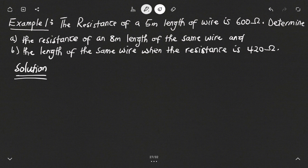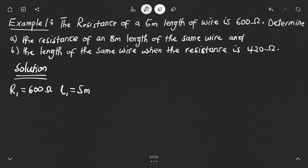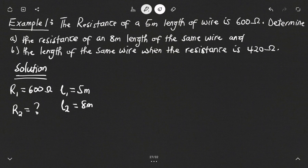The first thing we'll do is look at the parameters given in the question. The resistance R1 is 600 ohms and the length L1 is five meters. We are to determine the resistance of an eight meter length of the same wire, so L2 is eight meters and we have to find R2.